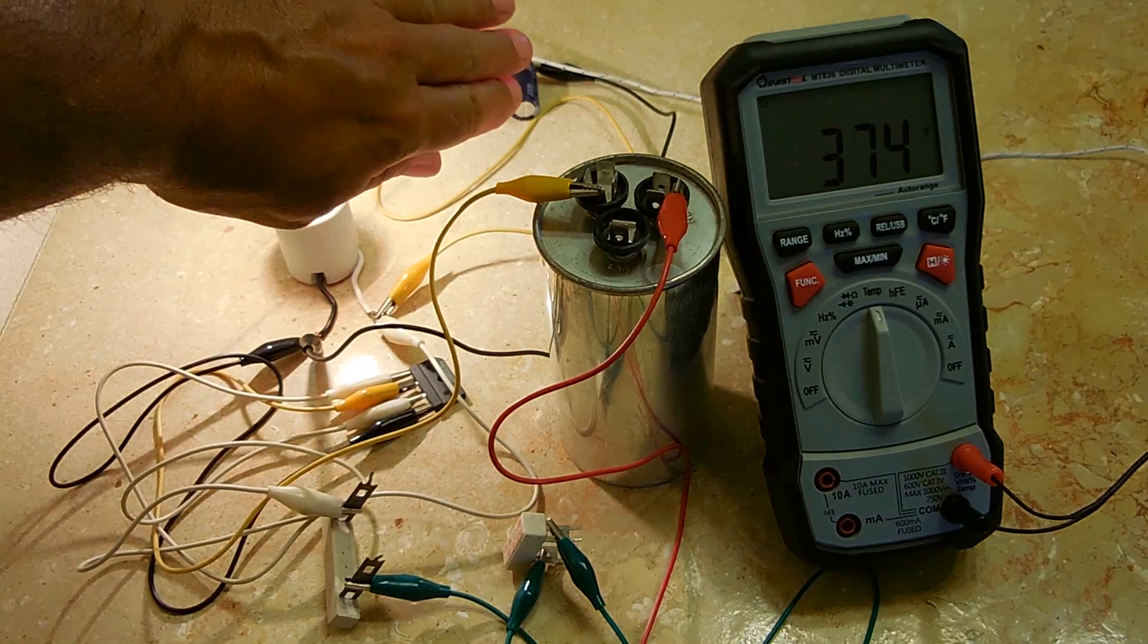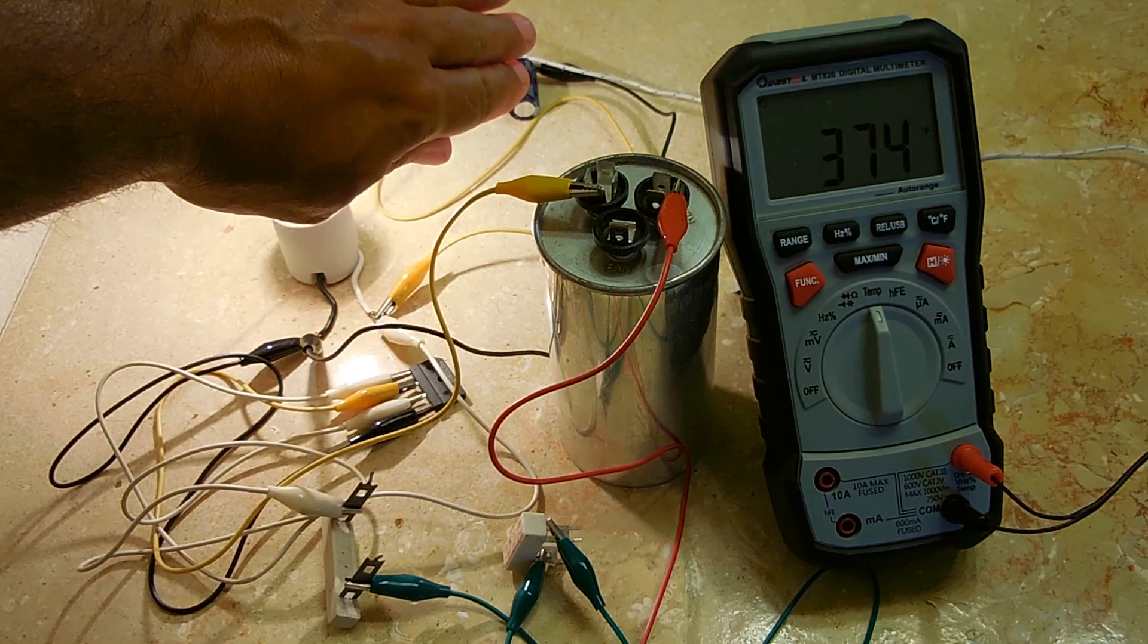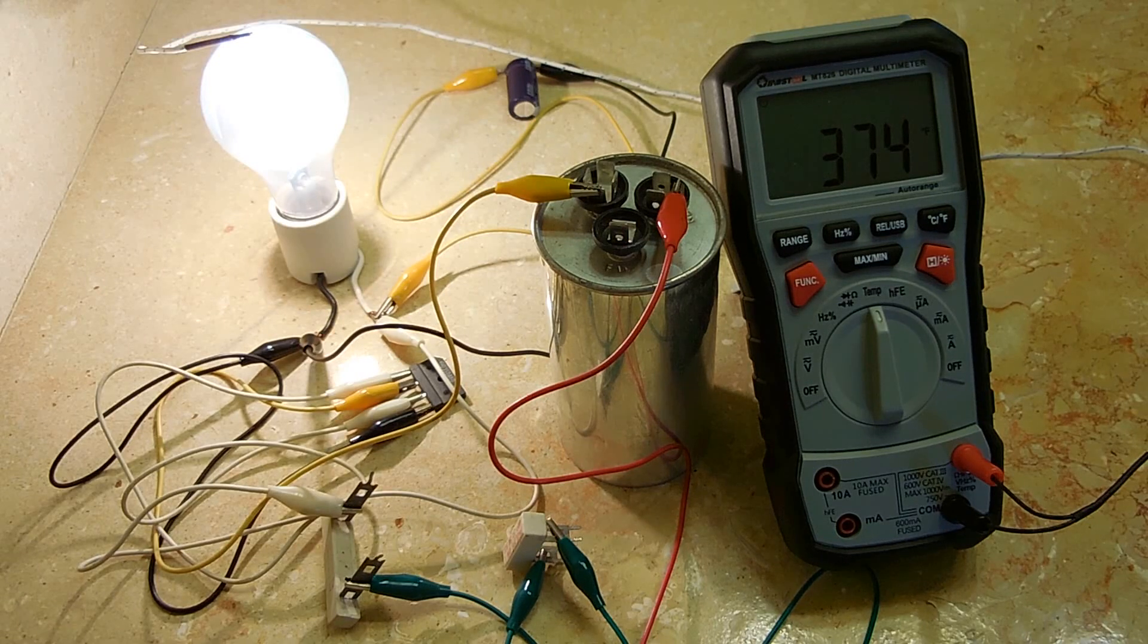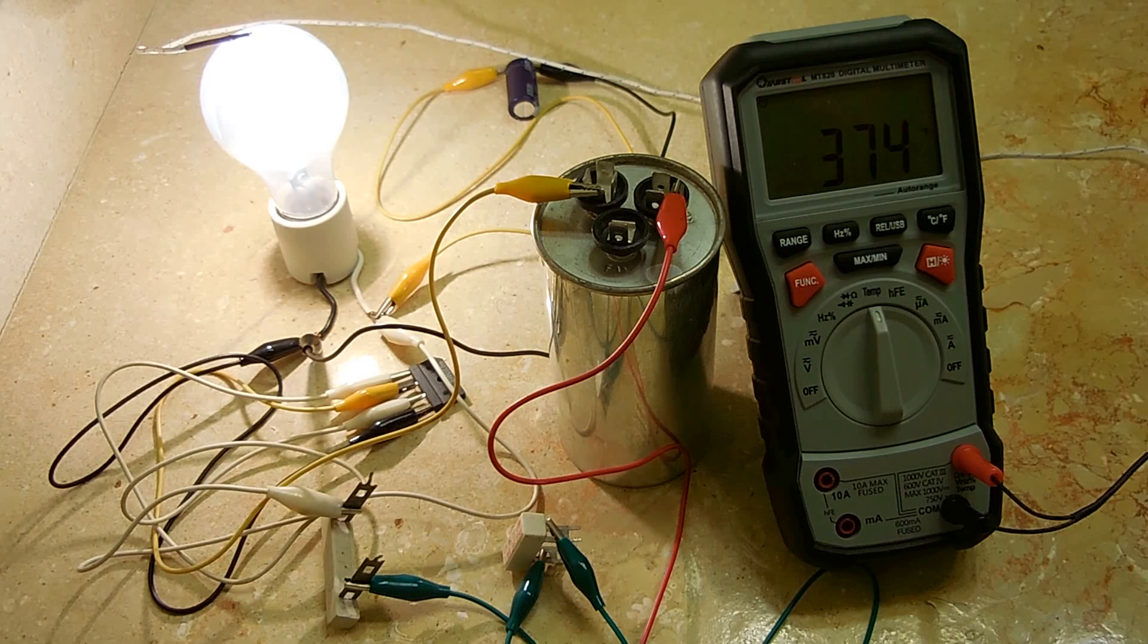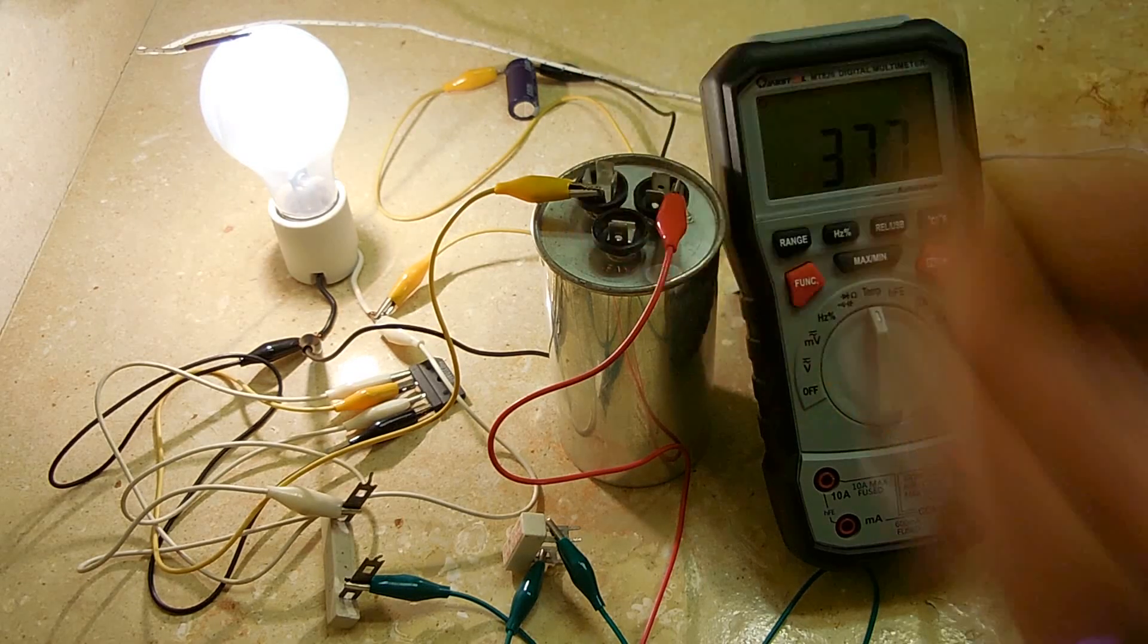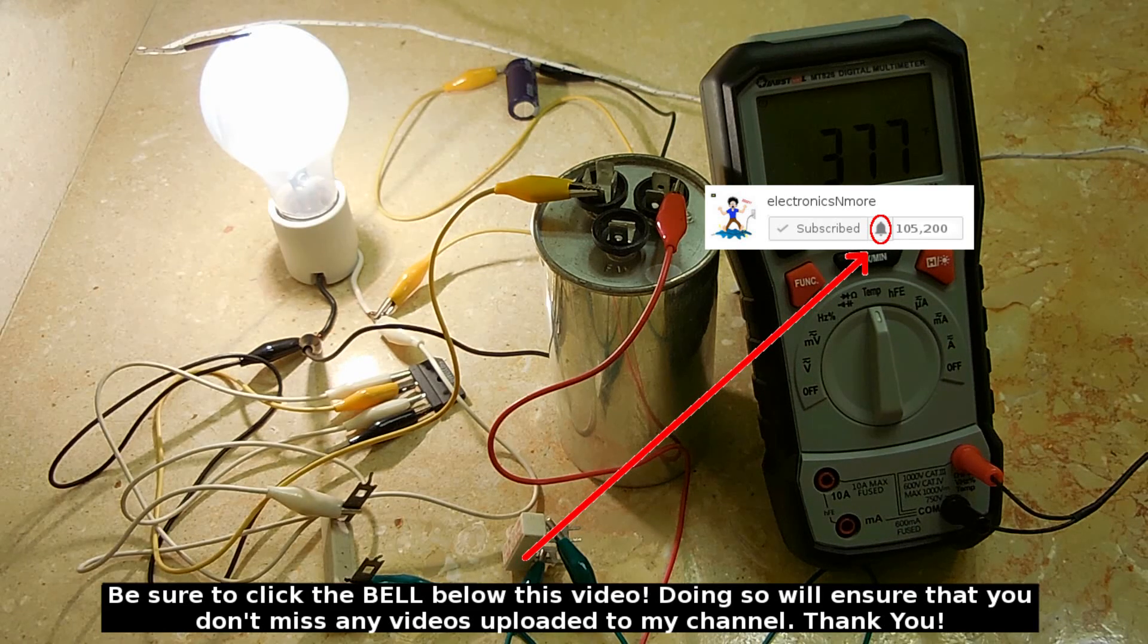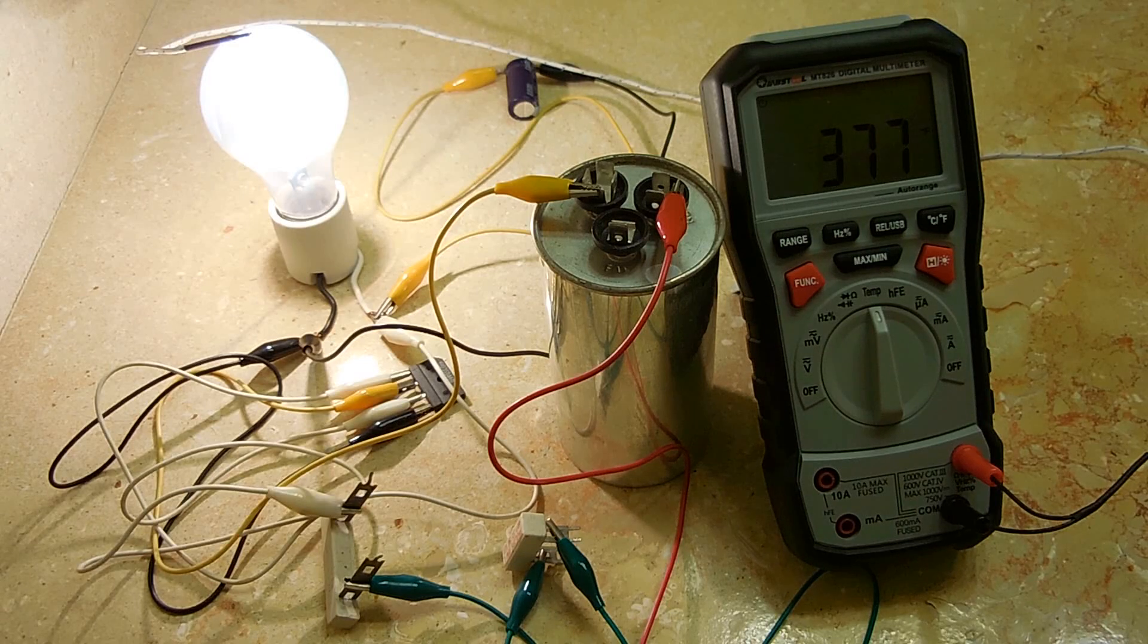As you can see, it's right around the same as the AC current. So if anybody ever tells you that DC current will make a bulb run cooler, you can just refer them to this video to prove to them that they're wrong. Using DC will not cause an incandescent lamp or more than likely a halogen to run any cooler.